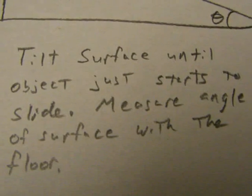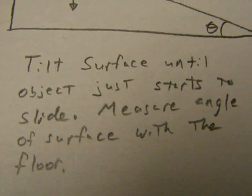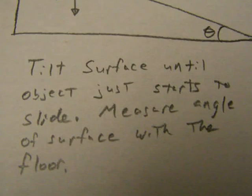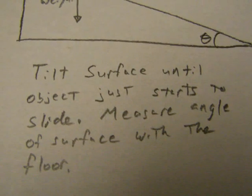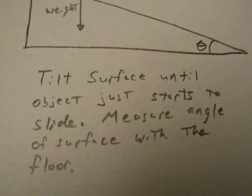For this lab, you will take your object and place it on a related surface. You will then tilt the surface until the object just starts to slide. Measure the angle of the surface with the floor.